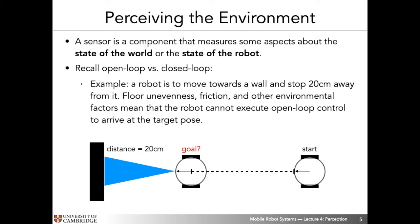A concrete example: for autonomous vehicles, one thing they would ideally do is infer the intention of pedestrians or other vehicles around them, because then they could plan trajectories as a function of those agents. Now for a simple example in the context of open versus closed loop control — we want a robot to move toward a wall and stop at 20 centimeters from it.